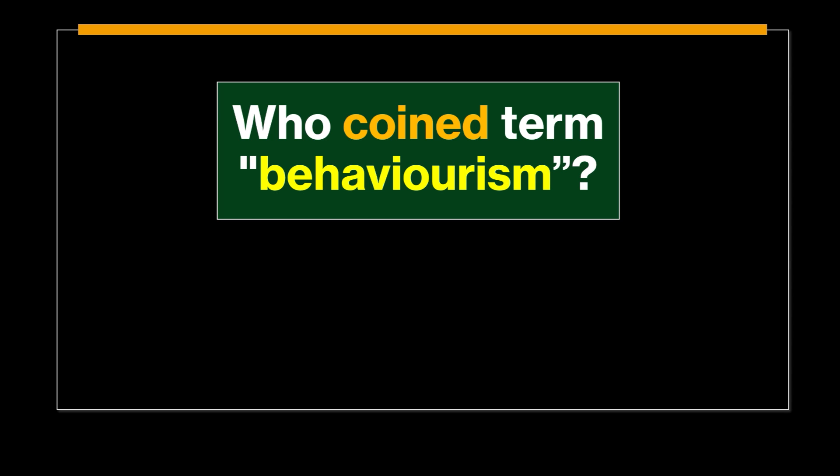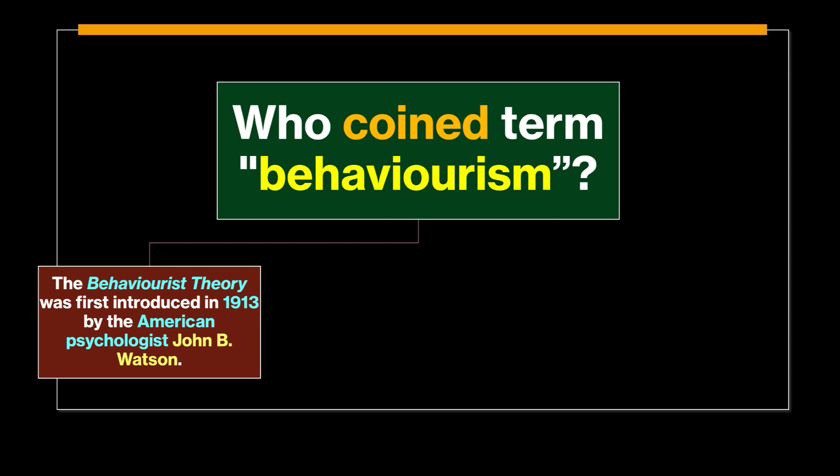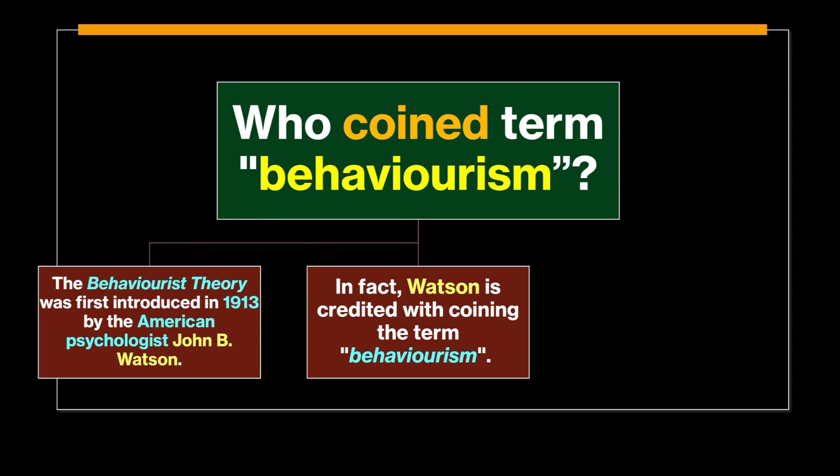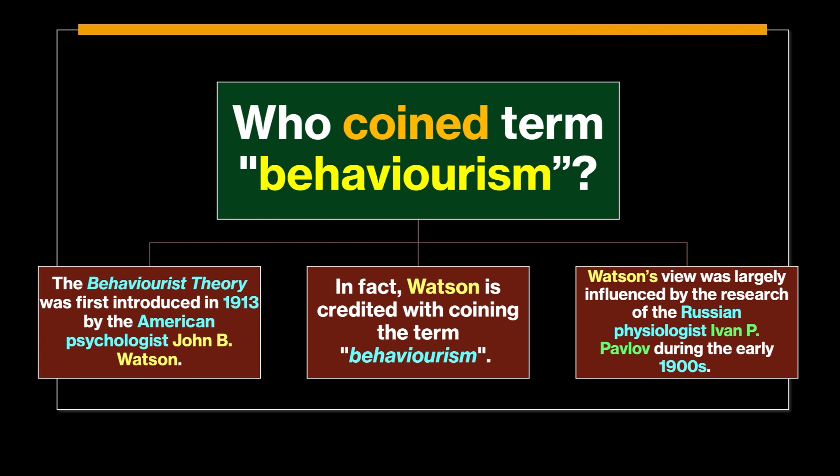The behaviorist theory was first introduced in 1913 by the American psychologist John B. Watson. Watson is credited with coining the term behaviorism. Watson's view was largely influenced by the research of the Russian physiologist Ivan P. Pavlov during the early 1900s.